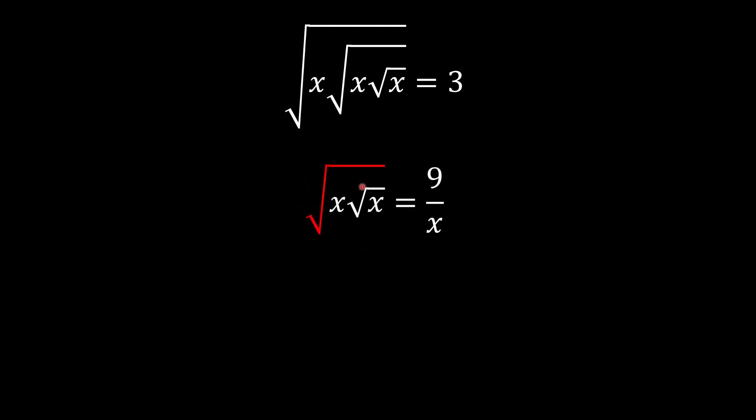And now we have another square root. We've got to do the exact same thing. We square it on both sides, cancel it, and we square it on this side.